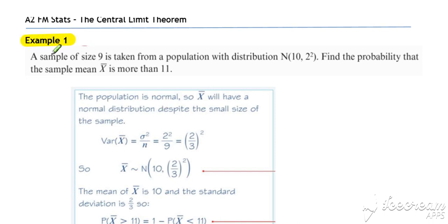Example 1. A sample of size 9 is taken from a population with distribution, a normal distribution, mu is 10 and sigma is 2. Find the probability that the sample mean, x bar, is more than 11.